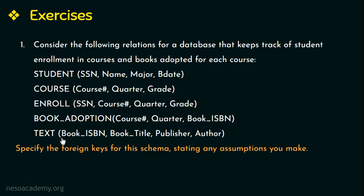Next, the text relation has book ISBN (international standard book number), book title, publisher, and author as its attributes. The book ISBN is unique for each book, so it is the primary key of the text relation. We also have the book adoption relation with course number, quarter, and book ISBN as its attributes. The question asks us to specify the foreign keys for these relational schemas, stating any assumptions made.